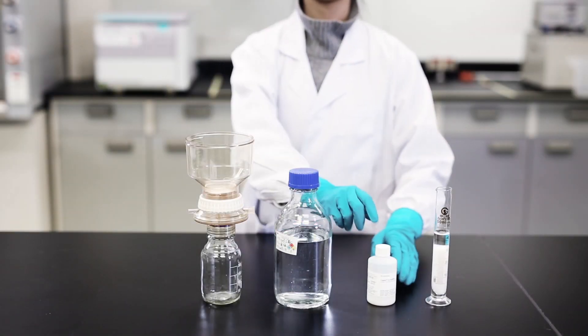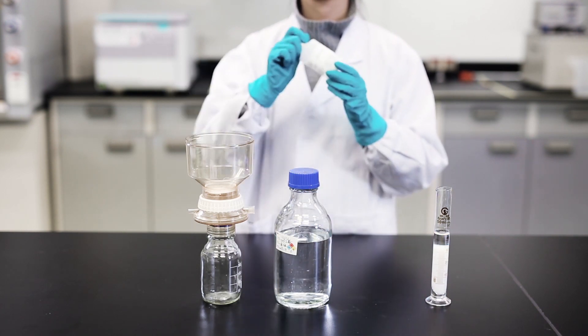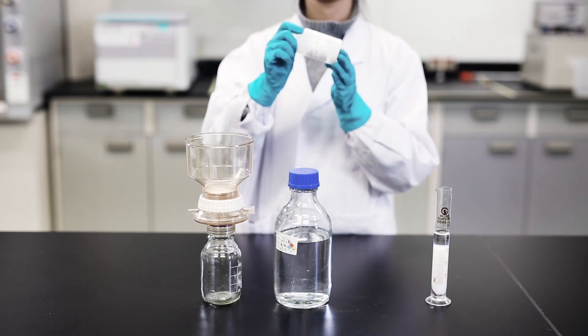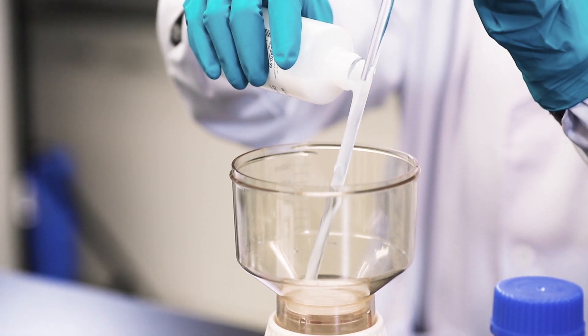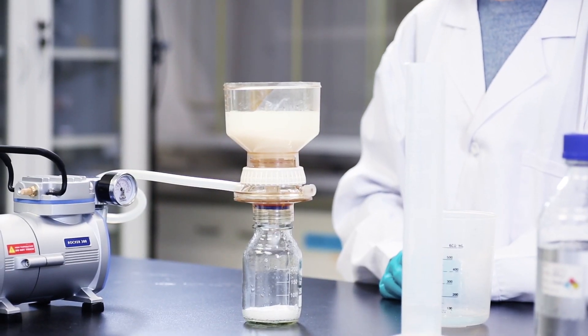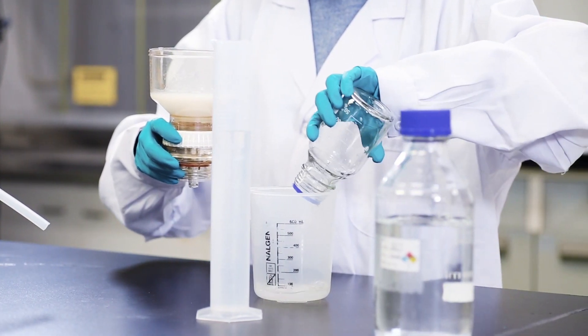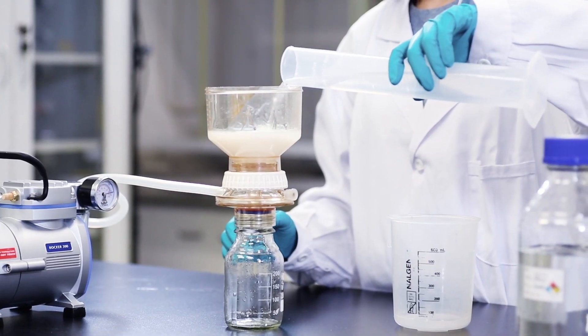Ensure that the resin is washed thoroughly into the packing solution before packing is started. Use a fritted glass funnel to wash the resin over to the packing solution. Suspend the resin by shaking it gently and pour it into the funnel.